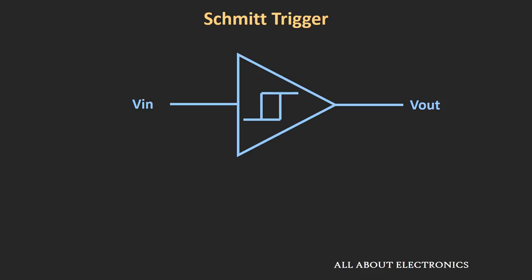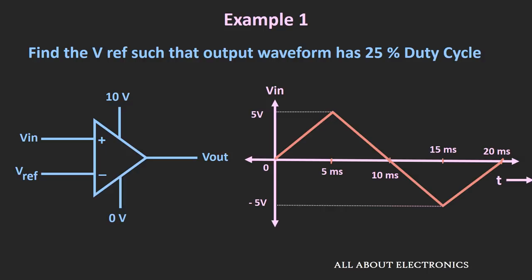Here is the first example and it is based on the comparator. In this example, a triangular wave is applied to this comparator and we have been asked to find the reference voltage such that the output waveform has a 25% duty cycle.